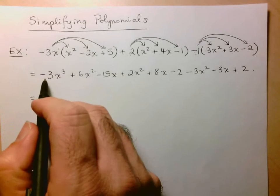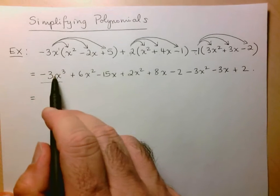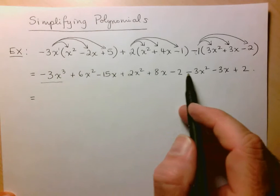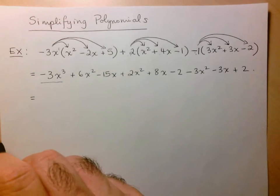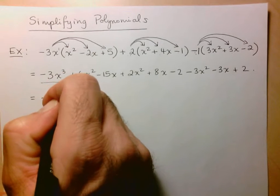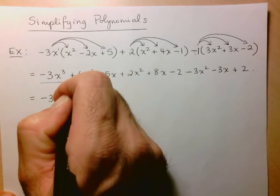So let me go from left to right here. And here I've got my negative 3x cubed. But as I look throughout all my other terms, there's no other term that has an x cubed. So this does not change. Can't simplify that with anything.